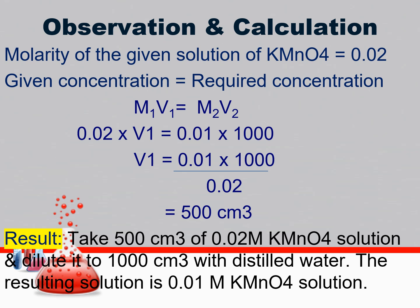Since the molarity of the given KMnO4 solution is 0.02 molar, now use the dilution formula M1V1 = M2V2. With this formula, calculate the volume you need to take from the 0.02 molar solution and dilute it. V1 = (0.01 × 1000 cm³) ÷ 0.02 = 500 cm³. So take 500 cm³ of 0.02 molar KMnO4 solution and dilute it to 1000 cm³ with distilled water. The resulting solution is 0.01 molar KMnO4.